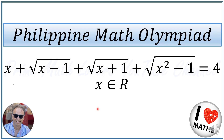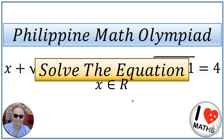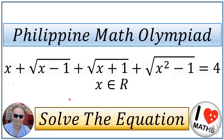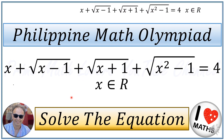Hi everyone, welcome to the Prime Math Lovers YouTube channel. Today we are going to solve this equation: X plus radical X minus 1 plus radical X plus 1 plus radical X squared minus 1 is equal to 4, where X is a real number. We need to solve the equation, meaning we need to find X.